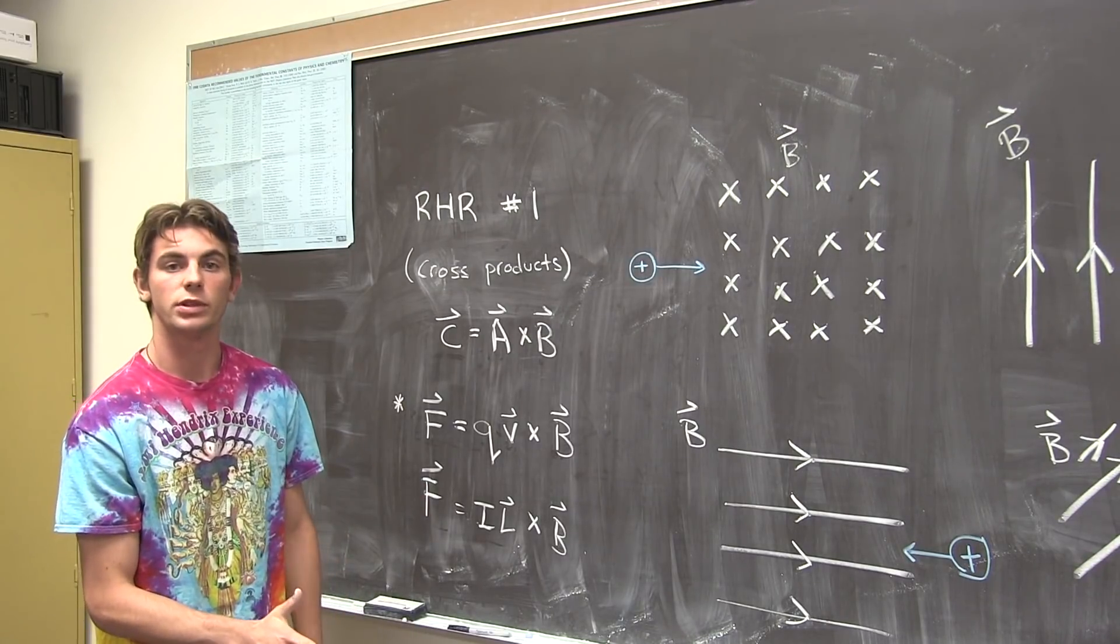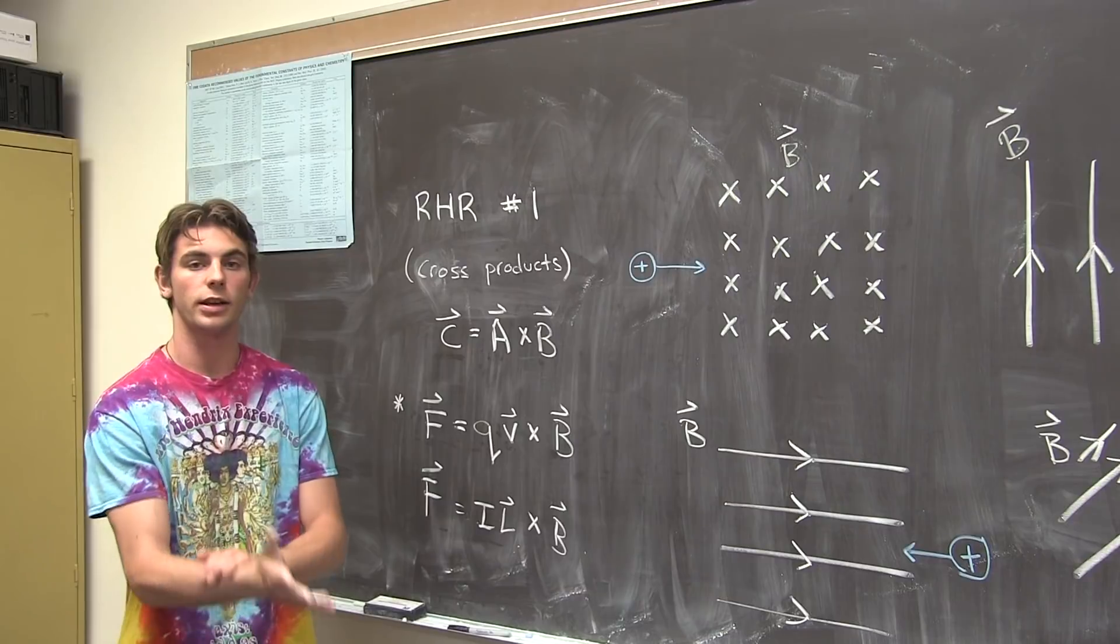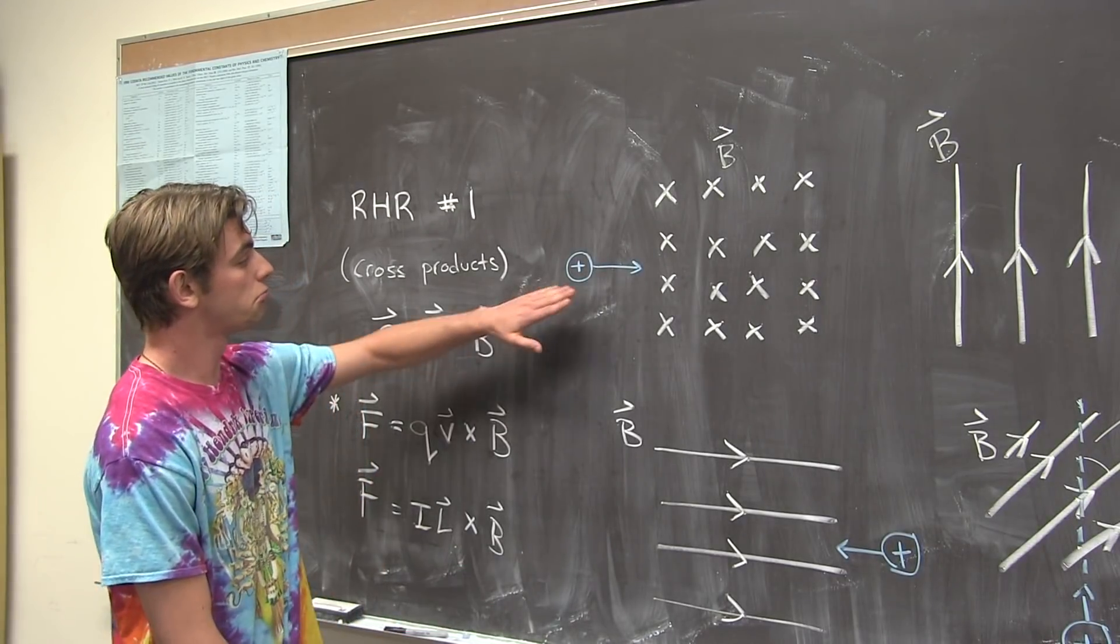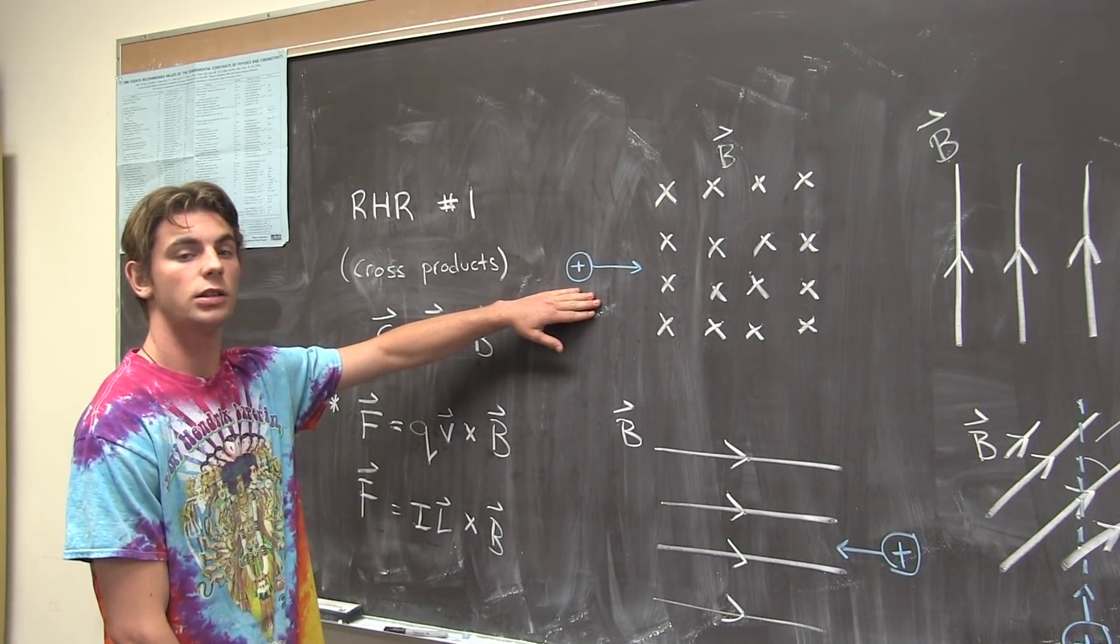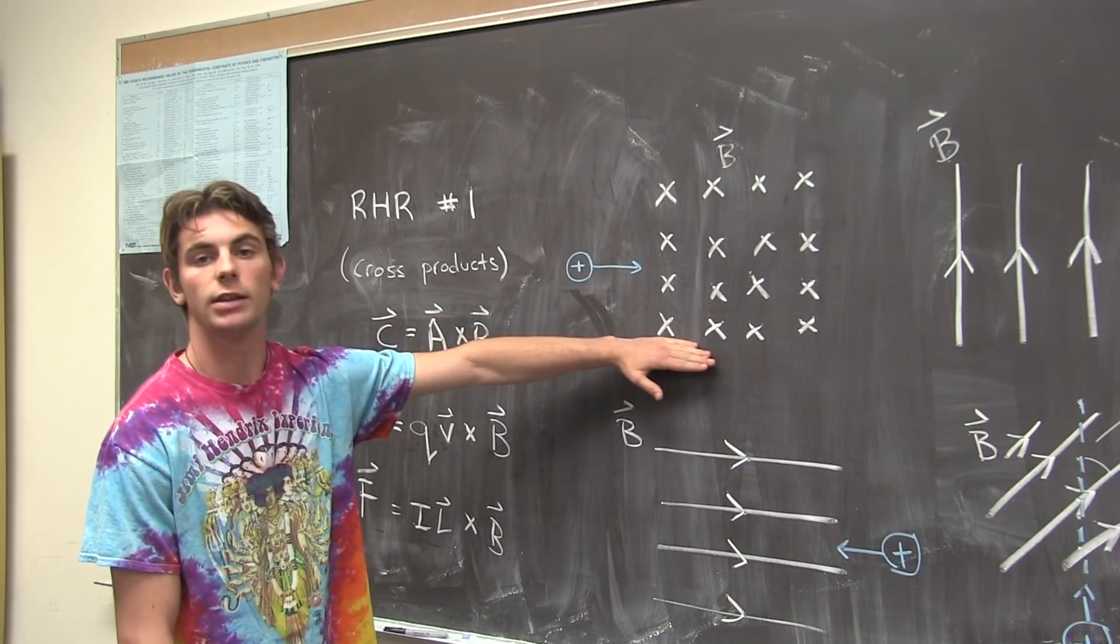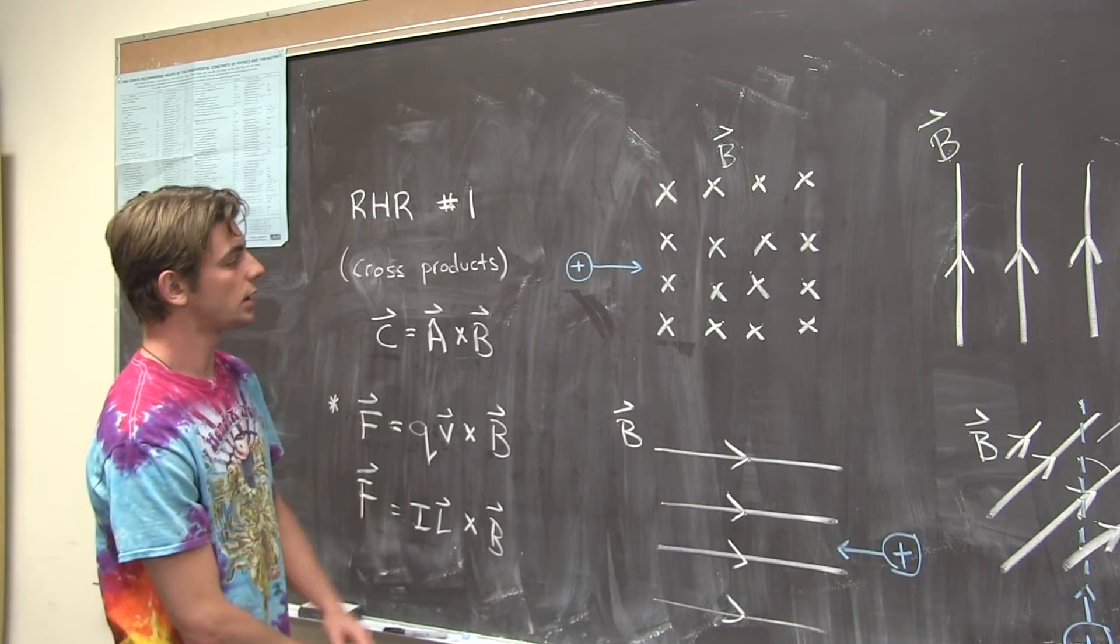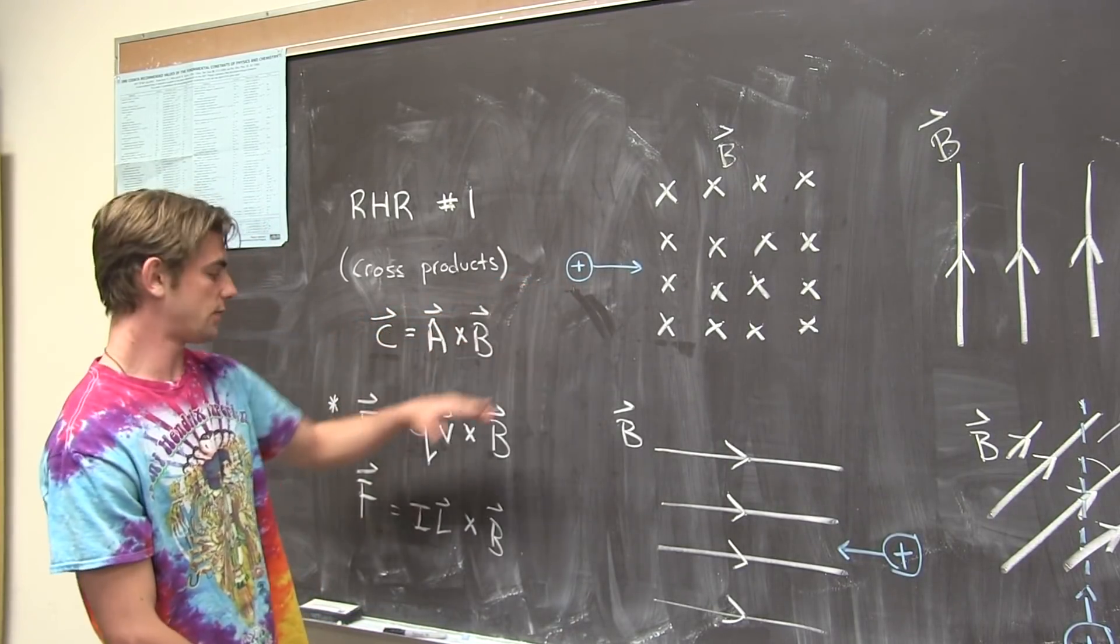Let's look at some examples. First, I encourage you to do them on your own. Here they are. So, in the first example, we have a positive charge moving in a magnetic field that is going into the page. So, let's line up our vectors accordingly. The first vector is v, that is our index finger.